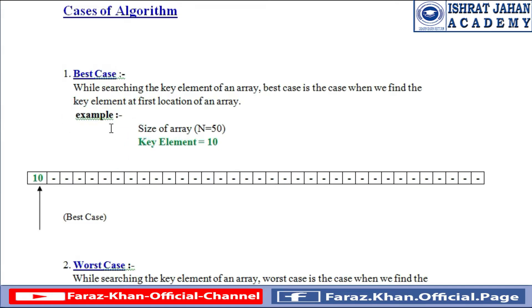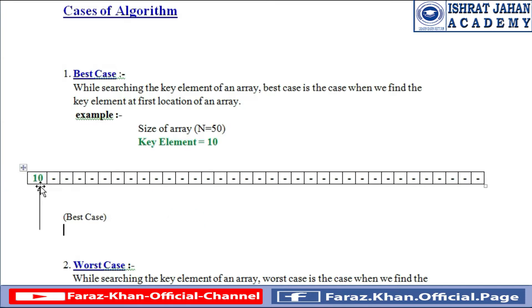For example, we have an array of size n equal to 50 and the key element — the element which we are going to find in a given array — is 10. So if we find that key element, which is 10, through an algorithm, we will call it a best case. Whenever we find a key element at the very first index, we call it a best case.